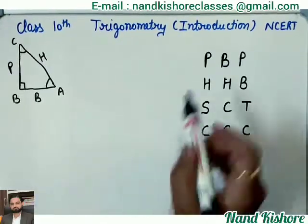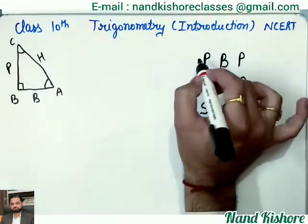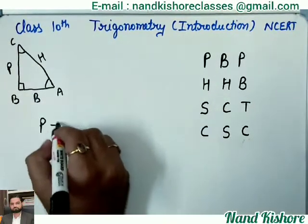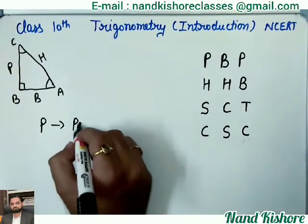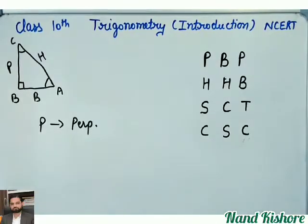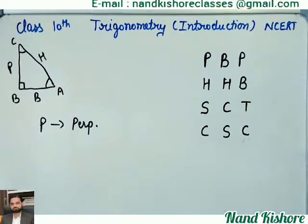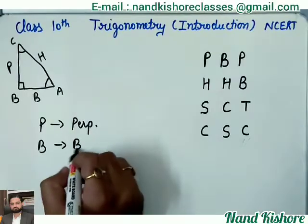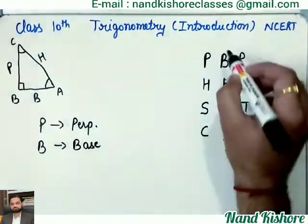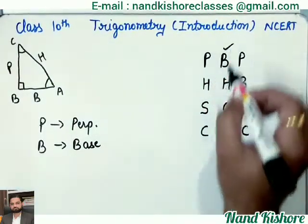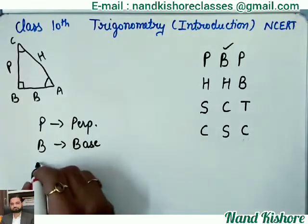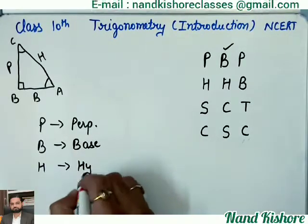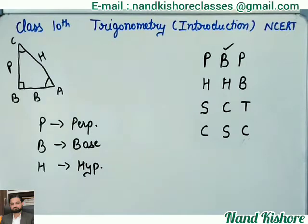What does it mean? P means perpendicular — do remember, P means perpendicular. B means base. And then next is H — H means hypotenuse. I hope you are clear with it.